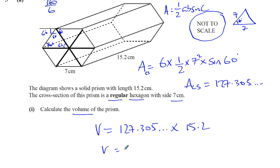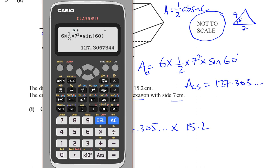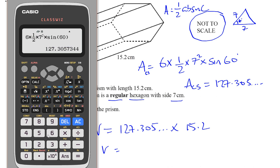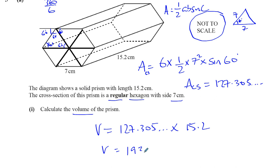That gives us the volume of the prism. We just take the calculator and the answer that we have in there and multiply it by 15.2. So times 15.2, and get our answer, which is 1935.047 dot dot dot. One, nine, three, five, point zero four seven, it continues on and on.